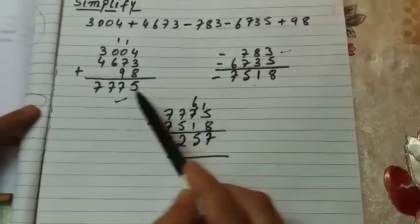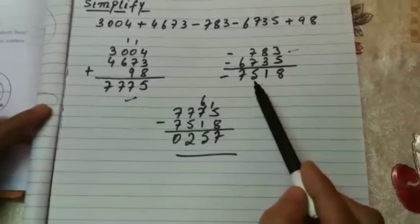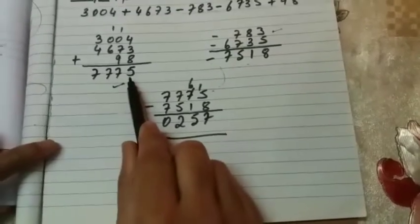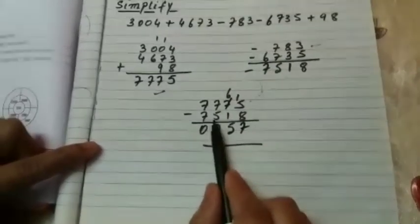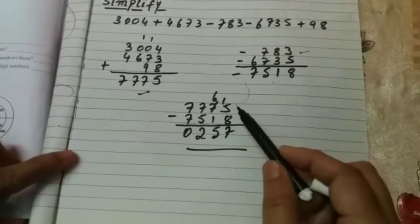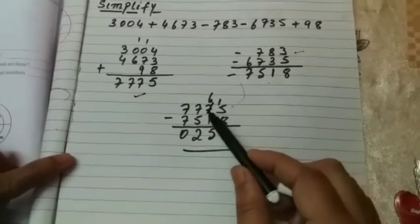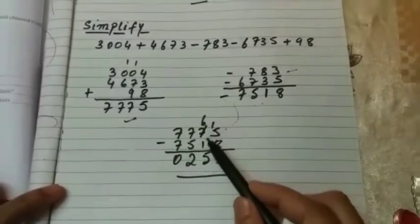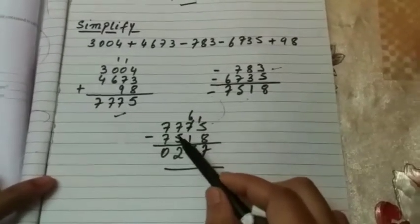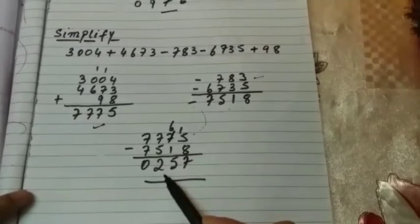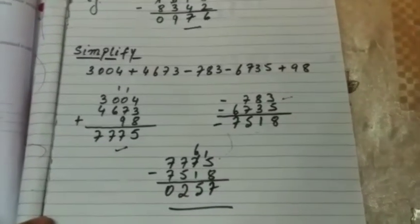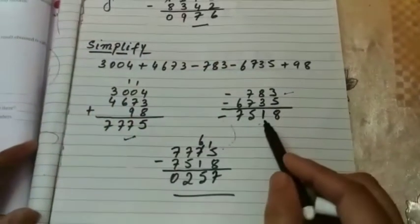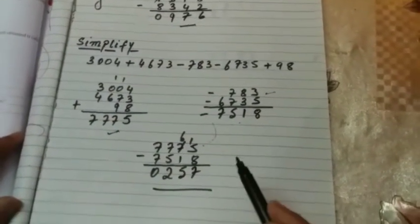Now take the two totals and subtract: 77775 minus 7518. Five minus eight — I cannot subtract, so I borrow; fifteen minus eight is seven. Six minus one is five. Seven minus five is two. Seven minus seven is zero. So the answer is 2257. That is how you simplify: add the plus numbers, add the minus numbers, then subtract. I hope it is clear.